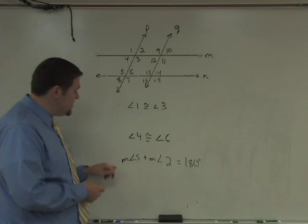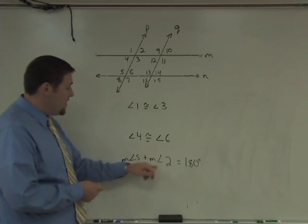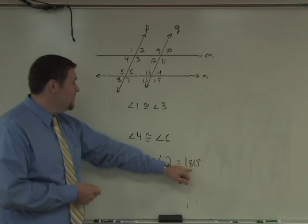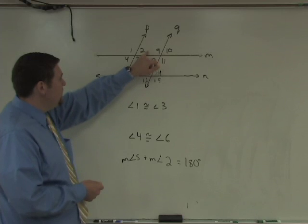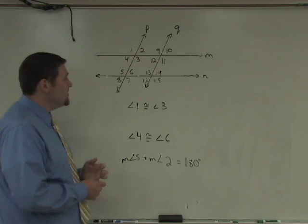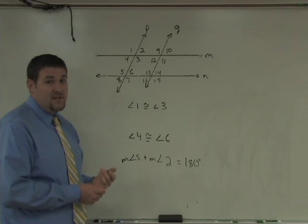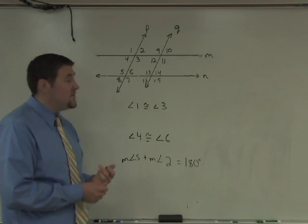Let's take a look at the last set. This shows that the measure of angle five and the measure of angle two sum to 180. Now angle two and angle five are supplementary, summing to 180. But let's take a closer look to see if that's enough information for us to make conclusions based on our converse theorems.